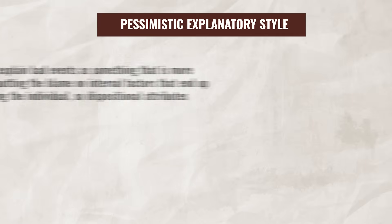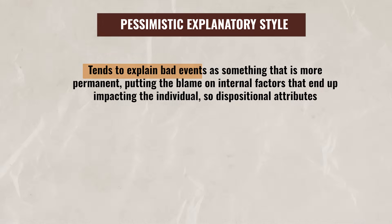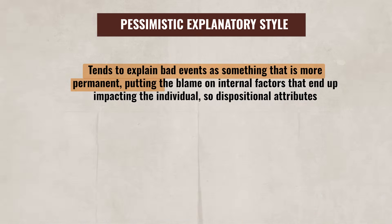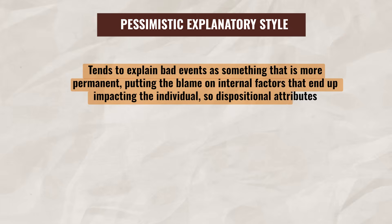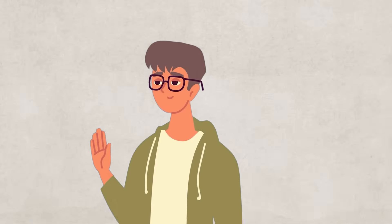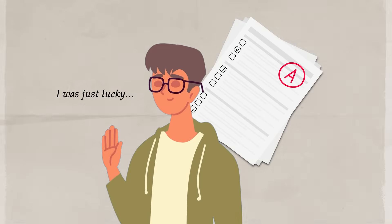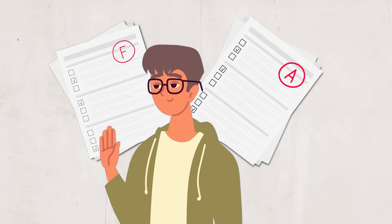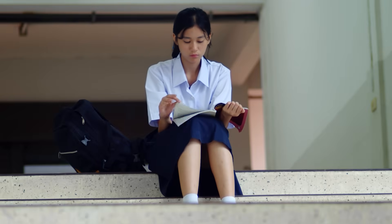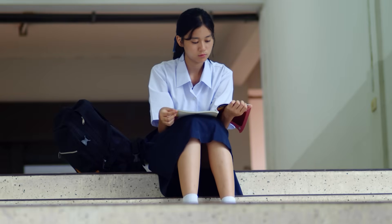On the other hand, a pessimistic explanatory style tends to explain bad events as something more permanent, putting the blame on internal factors — so dispositional attributes. If an event is good, a person with a pessimistic explanatory style will tend to attribute that positive event to situational factors, crediting external factors over internal. For instance, a pessimistic student that gets a good grade will say they got lucky or that the test was just easy this time. But if they get a bad grade, they may say it's because they are not smart enough or not good at taking tests.